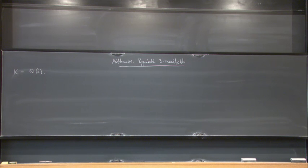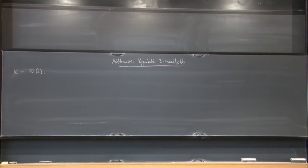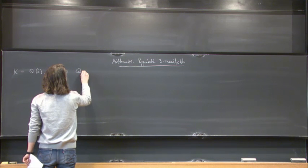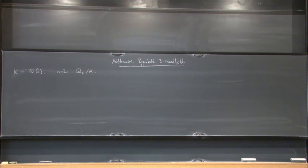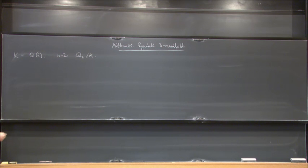I will work with a field which is Q adjoin the square root of minus 1, and I will use n equals 2, so I'm interested in the group GL2 with a field k. And so in this case, locally symmetric space,